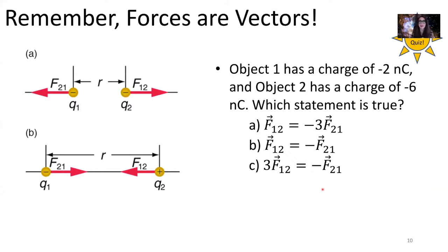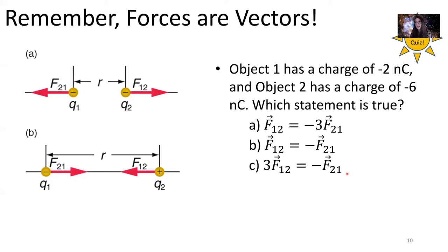Let's consider this question: Object 1 has a charge of minus 2 nanocoulombs and Object 2 has a charge of minus 6 nanocoulombs — both negative. Which statement is true: is F12 equal to negative 3 times F21, are they equal and opposite, or is F12 three times greater than negative F21? No matter what the charges are, positive or negative, the force charge 1 exerts on charge 2 is always equal but opposite to the force charge 2 exerts on charge 1. That's Newton's third law.